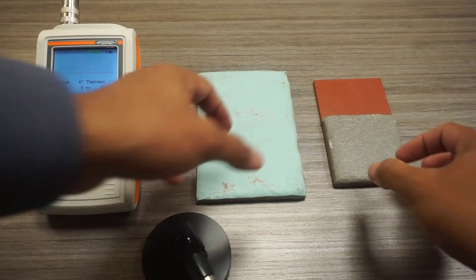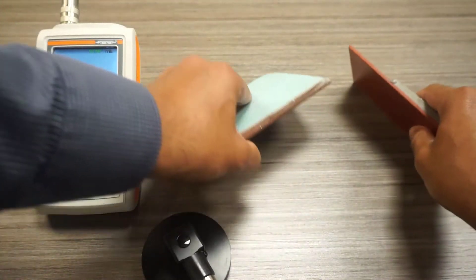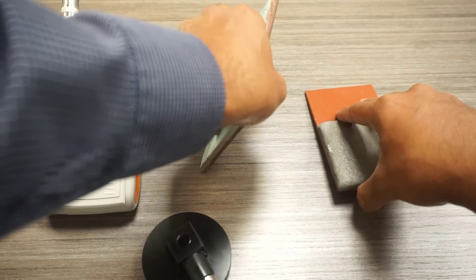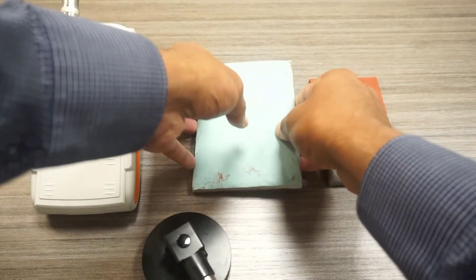Now, let's make some measurements on the intumescent coatings. You can see here that one is a little thicker than the other. I'll start by normalizing the unit to the base material.